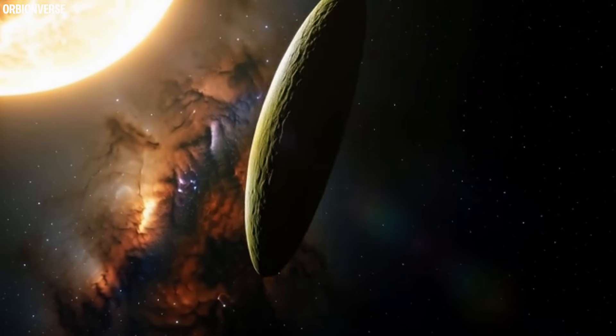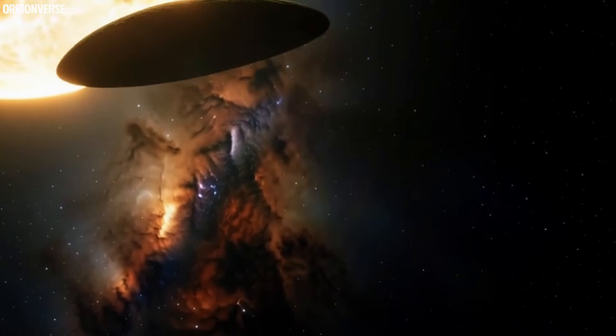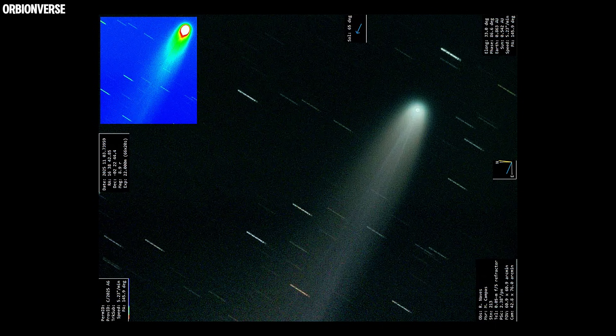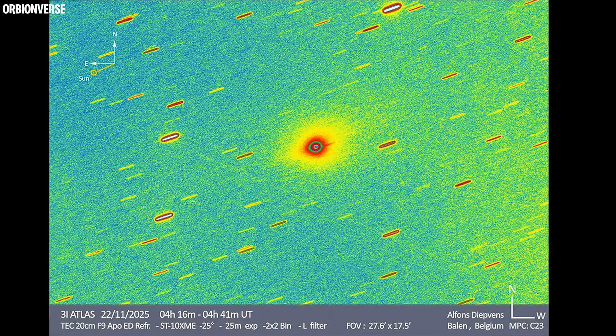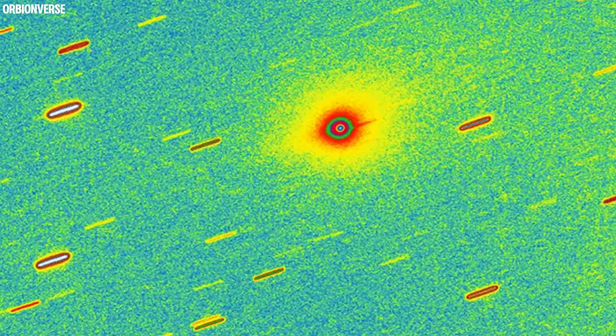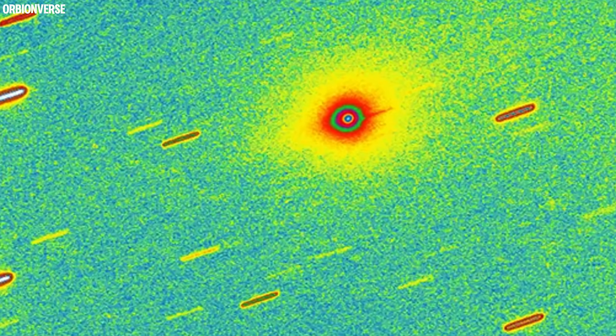Another shocking moment came when one user processed the coma in Adobe Premiere. As they reduced brightness, the inner colors stood out more clearly. Two strange, symmetrical shapes appeared, almost like twin jets or energy streams on both sides of the core.